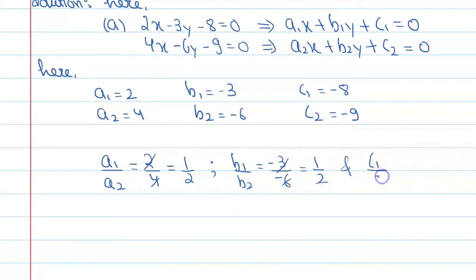Again, C1 upon C2 is equal to minus 8 upon minus 9, and you will get 8 upon 9.